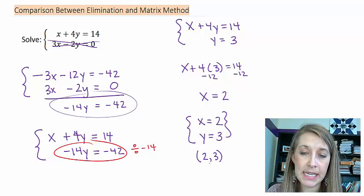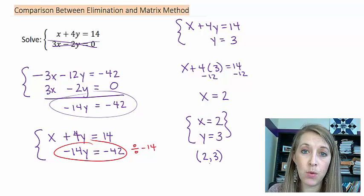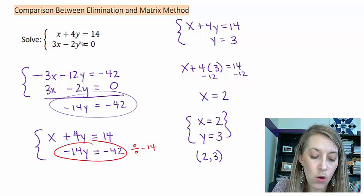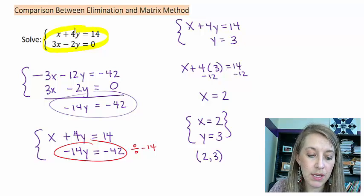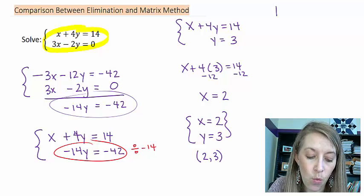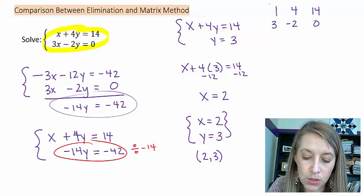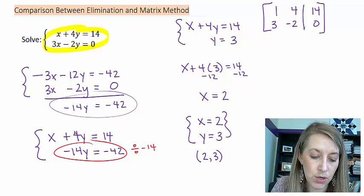Now I'm going to do this exact same thing but using the matrix method. Basically I'm going to do exactly what I did before, except instead of seeing x, y, and the equal sign, I'm just going to see the coefficients — just the numbers in front. So starting with my system of equations and putting it into an augmented matrix — just the coefficients — I have 1, 4, 14 for the first equation, and 3, negative 2, 0 for the second. This is my augmented matrix — that's my first step, just the original equations.